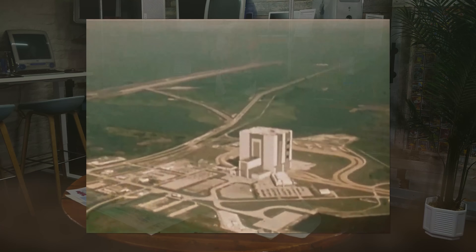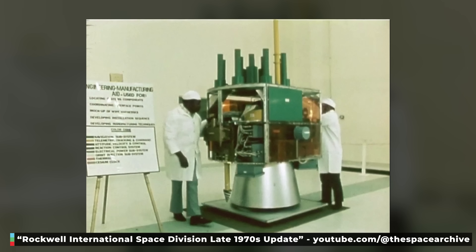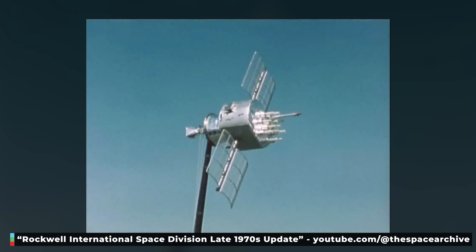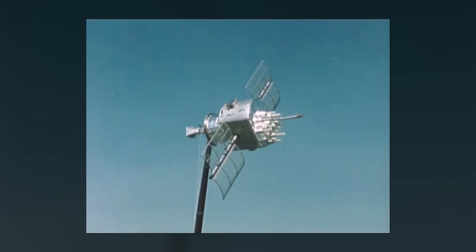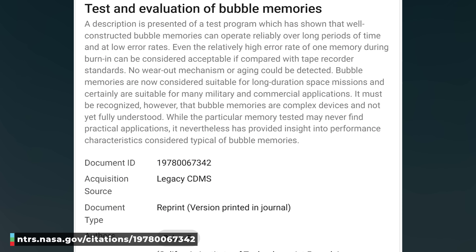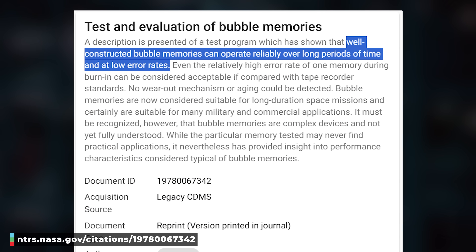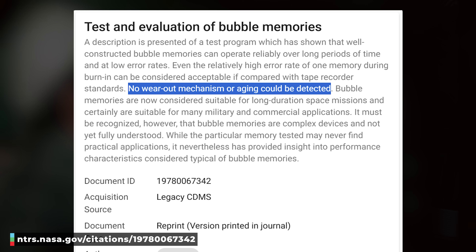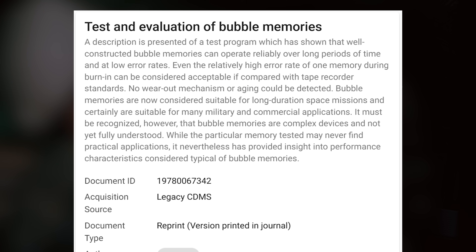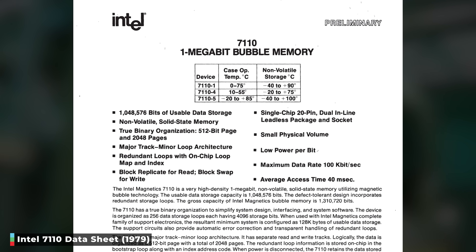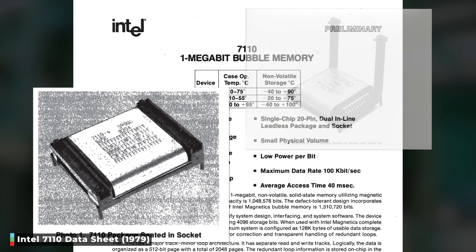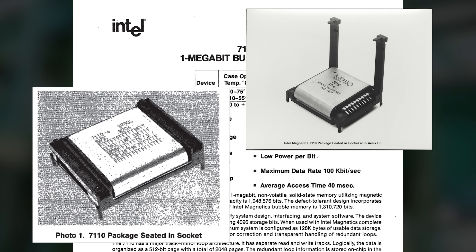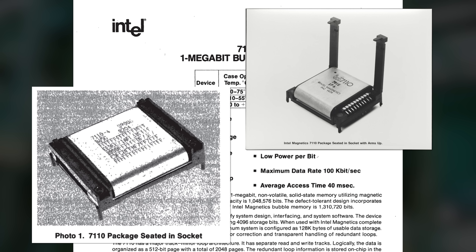The attraction of bubble memory was mainly that it was considered rugged and reliable. It was used in black box flight recorders by Rockwell and in spacecraft by NASA. A 1978 NASA publication concluded that well-constructed bubble memories can operate reliably over long periods of time and at low error rates, with no wear-out mechanisms or aging detected. Under the right conditions, bubble memory could operate for decades in a spacecraft. It was Intel who would produce the first one-megabit bubble memory storage device, called the Intel 7110, storing up to 128K of data in 1979 — quadrupling the capacity of previous bubble memory chips on the market.